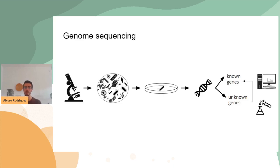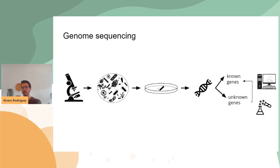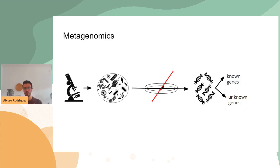For doing this characterization, there have been two important approaches. One has been doing experiments to see what the function of these genes may be, and the second has been computational analysis — mainly comparative genomics analysis — which enlightens the evolutionary history of these unknown genes and provides a lot of very relevant information. However, with genome sequencing we can only access the genomes of cultivated species.